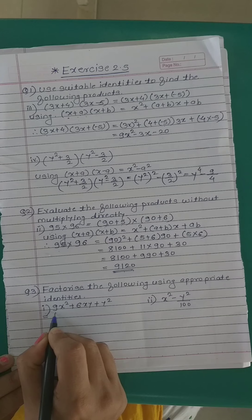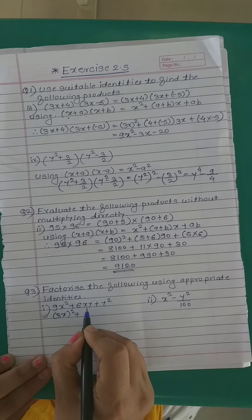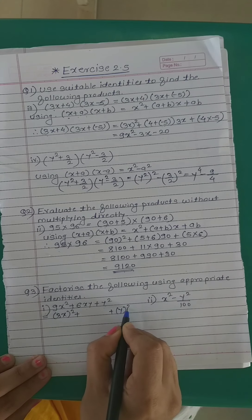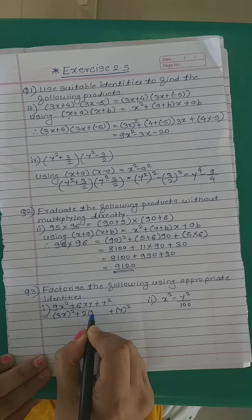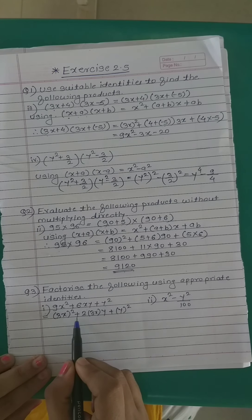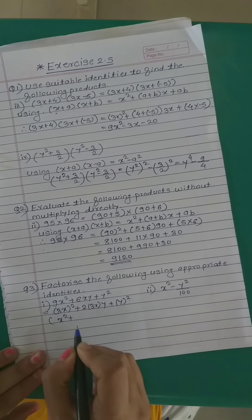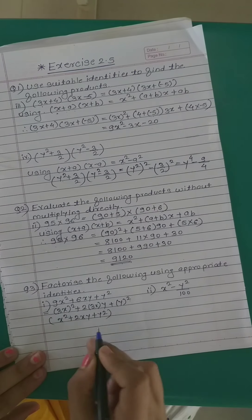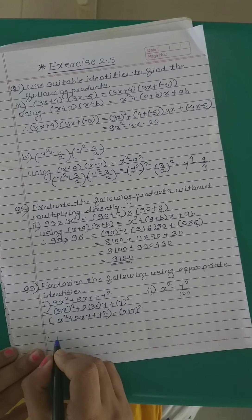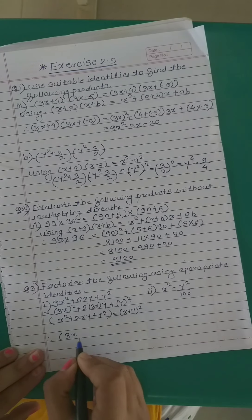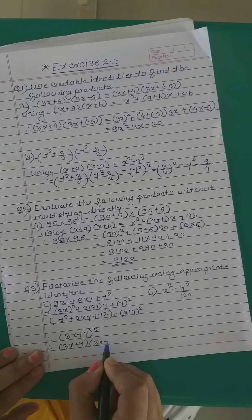9x² can be written as (3x)². The middle term 6xy = 2·(3x)·y. So 9x² + 6xy + y² = (3x)² + 2·(3x)·y + y², which is in the form x² + 2xy + y² — an expansion of (x + y)². Therefore the factors are (3x + y)(3x + y).